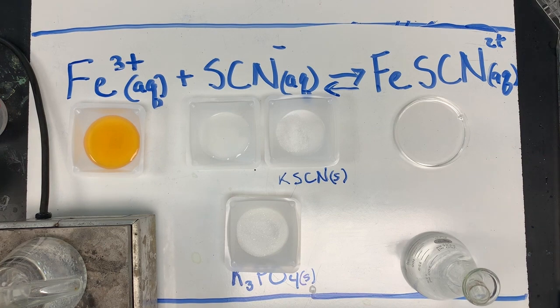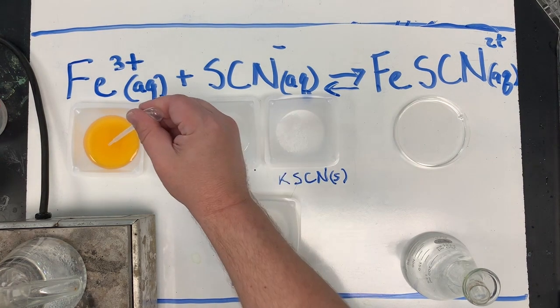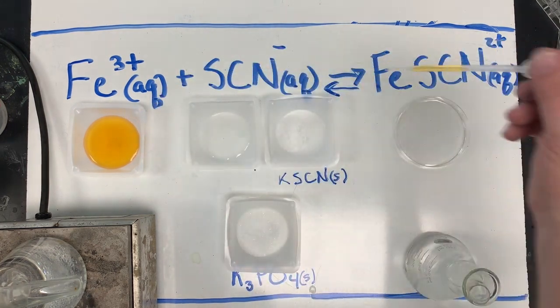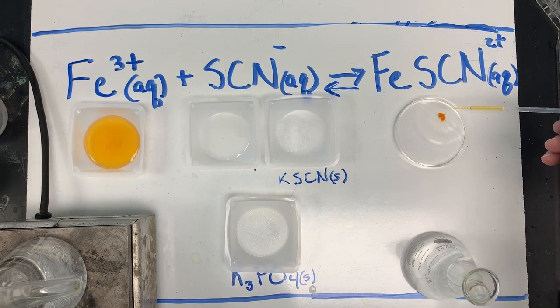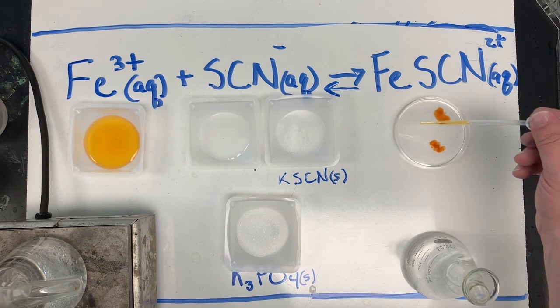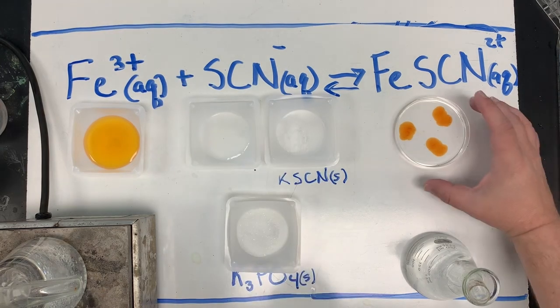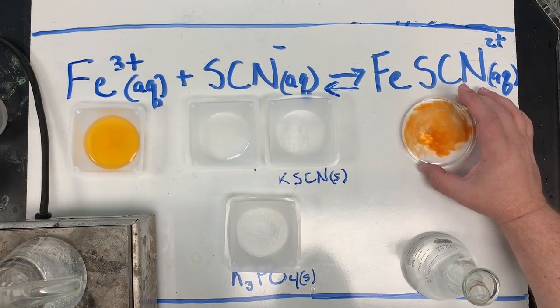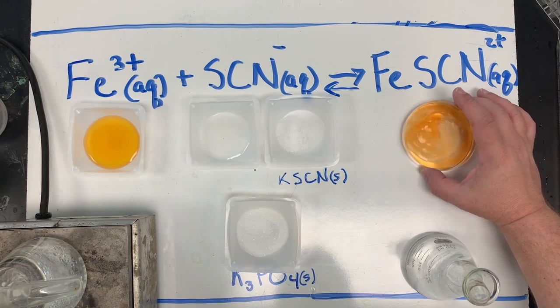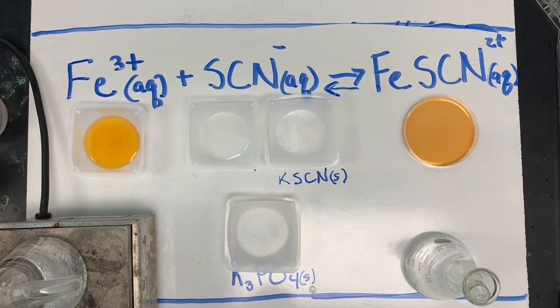I'm going to take a pipette and add three drops of our iron. So we're going to add the iron to the solution. We'll go one, two, three. You'll notice there's a color change already. As I swirl this to get it all mixed together, you can see our solution is a darker color.